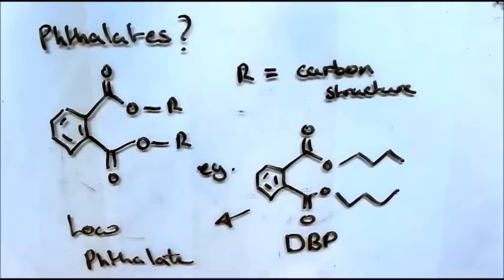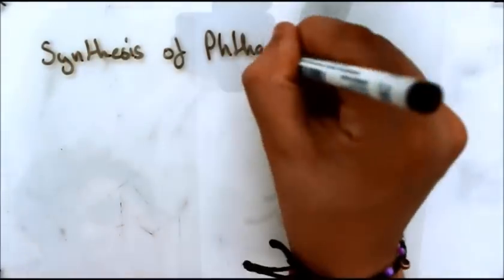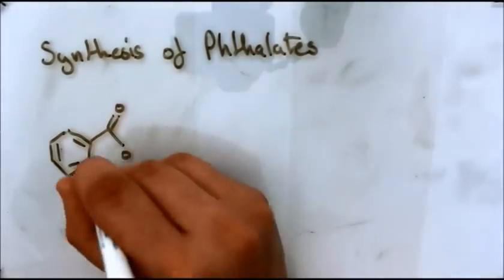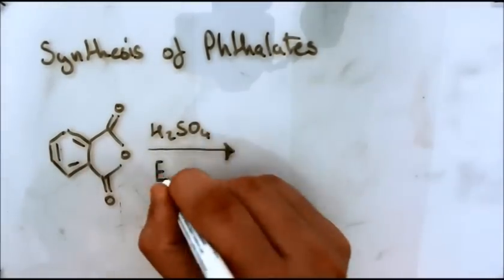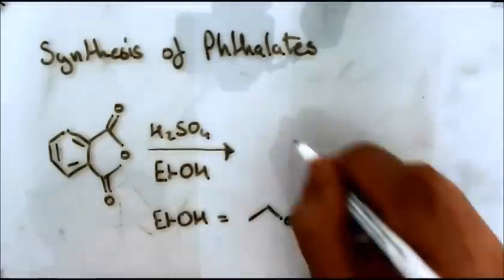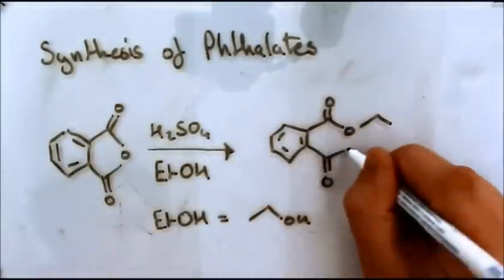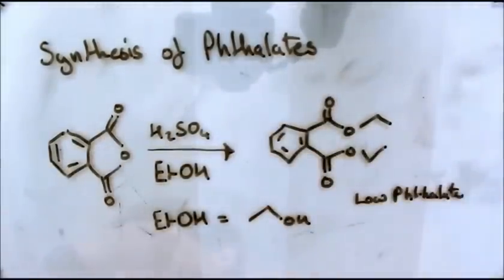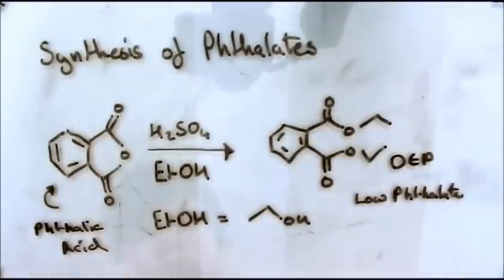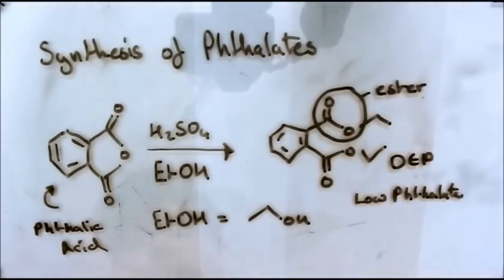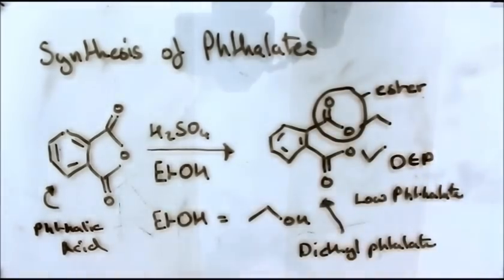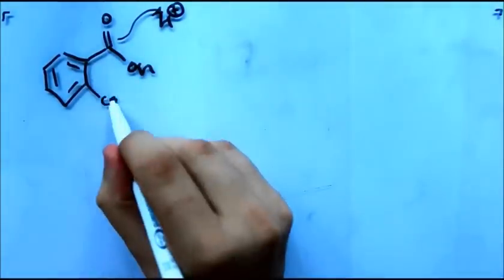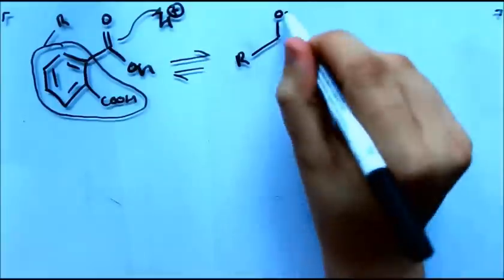DBP is a controversial plasticizer, the reasons for which will be explained later. Phthalates are synthesized by phthalic anhydride, which is a cheap and readily available chemical. Phthalic anhydride is first hydrolyzed to make phthalic acid. This undergoes an esterification reaction with an alcohol in the presence of an acid catalyst, the mechanism of which is shown. A double-headed arrow shows the movement of two electrons.